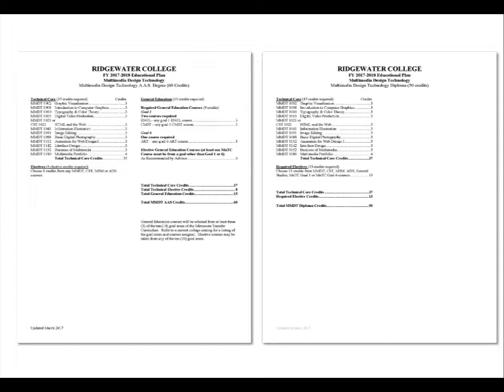The electives have much more flexibility. Elective credits can be taken from within the multimedia design department, the computer systems technology department, the marketing and sales management department, or administrative support—which would include legal assistant or business presentations. Those electives can really be customized. We want a customizable degree. We want to look at your career goals and make sure you take the classes that help fulfill those goals and get you ready for the real world.